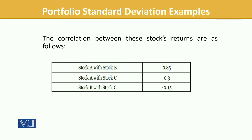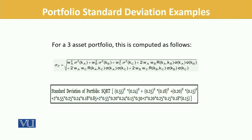The correlation required is given: A with B, A with C, and B with C — three possible combinations are provided. Using these figures you should be able to come up with the components as well as the standard deviation of the portfolio. The formula is a bit daunting but still very applicable.